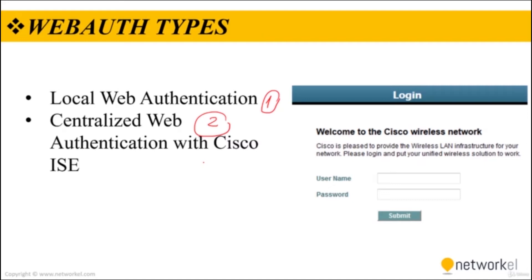Cisco then created centralized web authentication (CWA) to overcome local web authentication deficiencies. CWA supports all advanced services such as client provisioning, posture assessment, acceptable use policies, password changing, self-registration, and more.